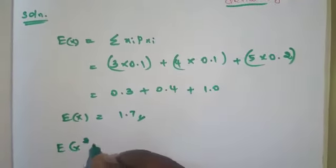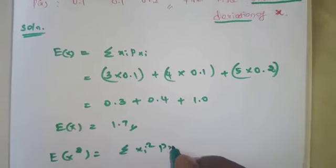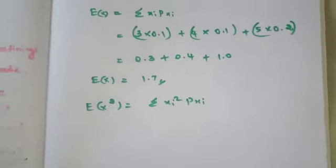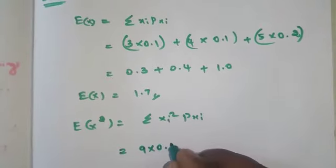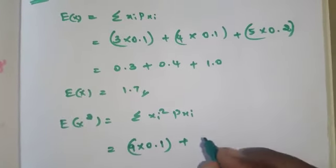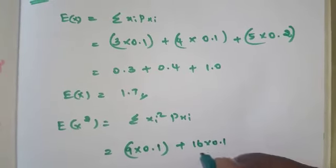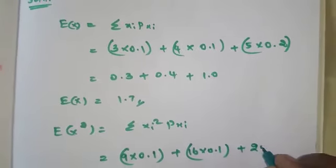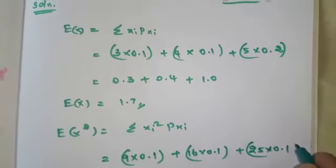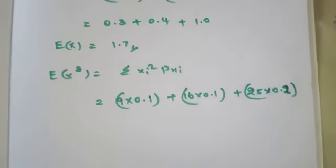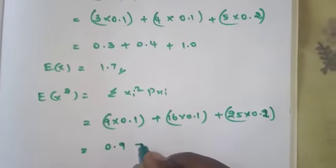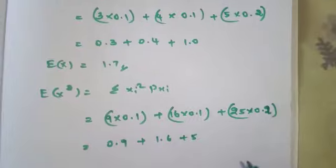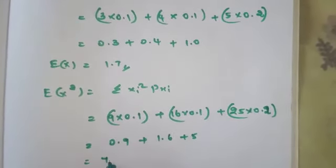Next, find E(x²) using the formula: summation of xi² times p(xi). Square each x value and multiply by p(xi). The values are 0.9 plus 1.6 plus 5.0, which totals 7.5. So E(x²) = 7.5.